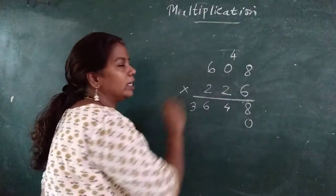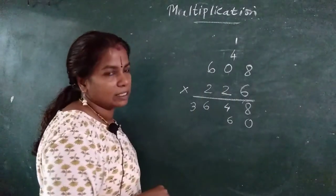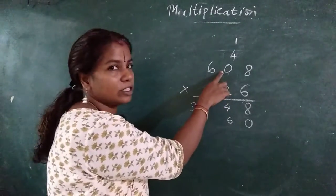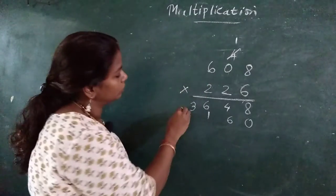Put here 0. 2, 8's are 16. Very good. 6, 1, 16. 2, 0's are 0, plus 1, 1. 2, 6's are 12.